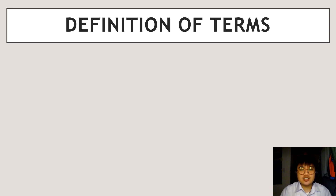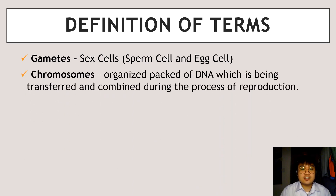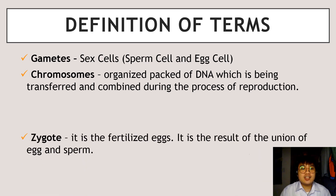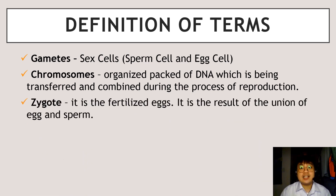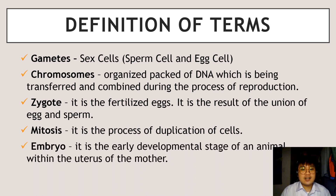Before we go to the next presentation, let me discuss some definitions of terms. Gametes are also called sex cells, which include the sperm cell and the egg cell. Chromosome is an organized pack of DNA which is transferred and combined during the process of reproduction. Zygote is the fertilized egg and the result of the union of the egg cell and the sperm cell. Mitosis is the process of duplication of cells. Embryo is the early developmental stage of an animal within the uterus of the mother. All of these terminologies will be used in the next presentation.